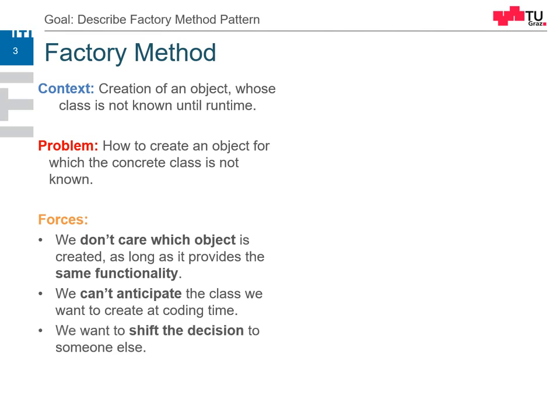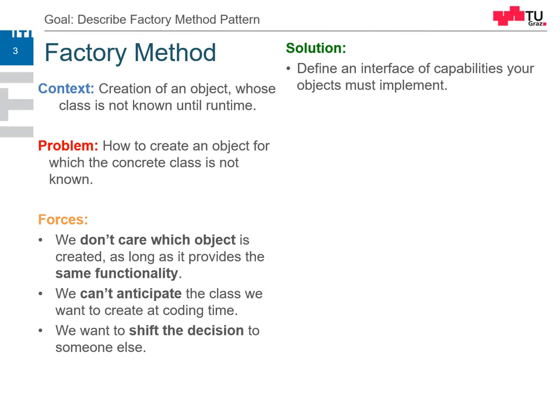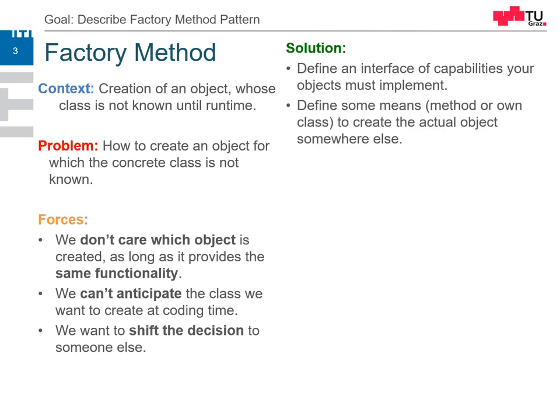We want to shift the decision of which class to create to someone else, and the solution is we define an interface with the needed capabilities — what do we require from our product, from our object. Then we define some means to create the actual object, a method somewhere, and then we have an implementation of this interface.